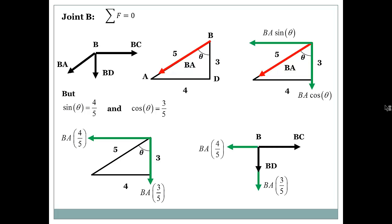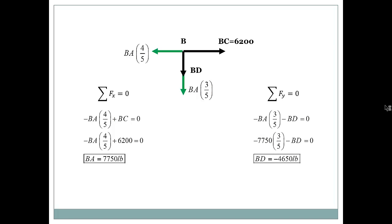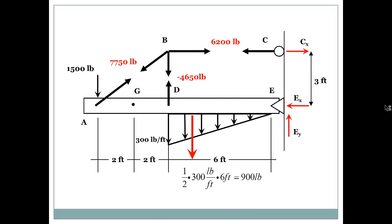So the way I look at the joint B, basically as you see, now all the forces are resolved either on the X or the Y axis. So this is the joint. Now I substitute BC because I already know BC. BC is basically the reaction force at joint C. Now if I do the summation of the forces in the X, I can solve for BA to be 7,750 pounds. And if I do the summation of the forces in the Y direction, I can solve for BD to be minus 4,650. So these are the forces I'm having right now.